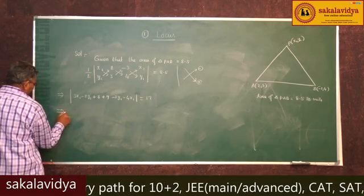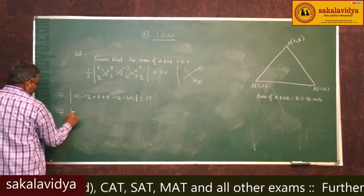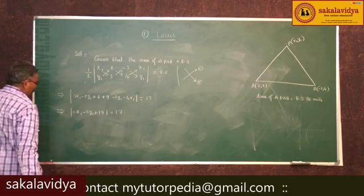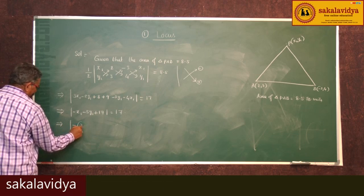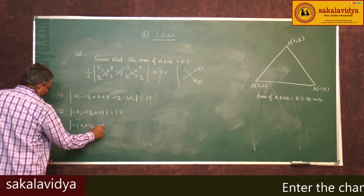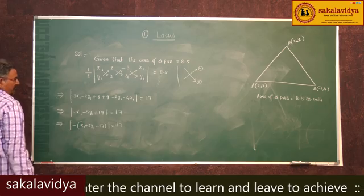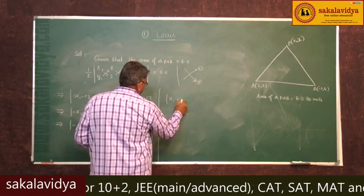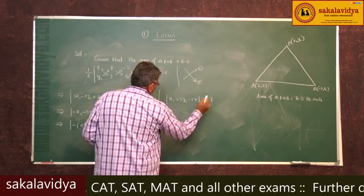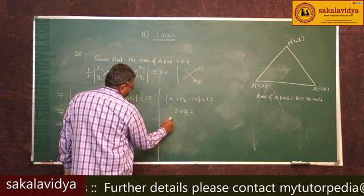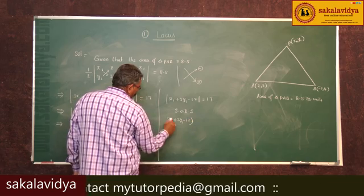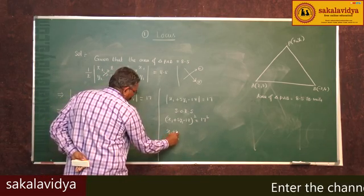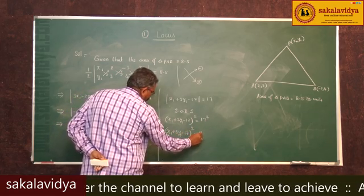This simplifies to the modulus of -4x1 + 3x1 - x1 - 5y1 + 5y1 + 17 equals 17. Bringing minus common out, modulus of x1 + 5y1 - 17 equals 17. Squaring on both sides, we get (x1 + 5y1 - 17)² = 17². Bringing 17² to the other side: (x1 + 5y1 - 17)² - 17² = 0.